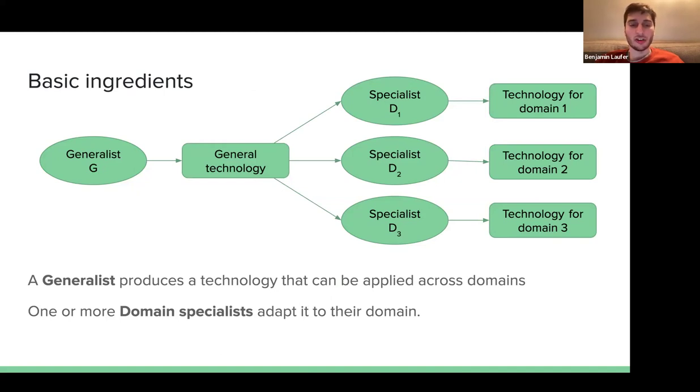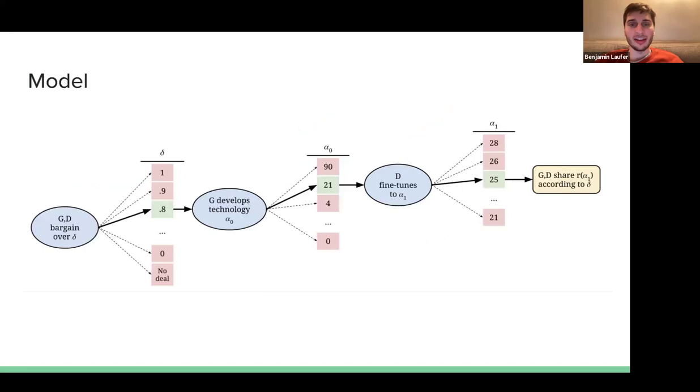In this model, a generalist produces a technology that can be applied across domains, and then one or more domain specialists adapt it to their particular use case. Here is a depiction of the model.